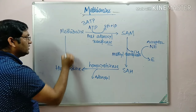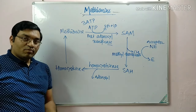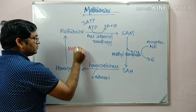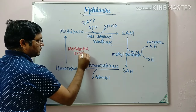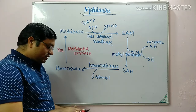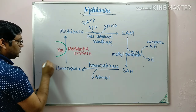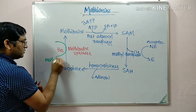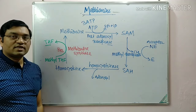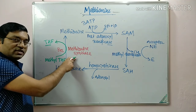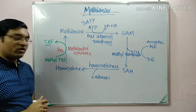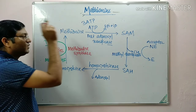Homocysteine is converted back into methionine. Two reactions are important here: first the methyl transferase reaction, and second the methionine synthase reaction. For the methionine synthase reaction, vitamin B12 is required, and there is utilization of methyl tetrahydrofolate, which is converted into tetrahydrofolate. So methionine synthase is vitamin B12-dependent; it requires methyl tetrahydrofolate, which is converted to tetrahydrofolate as homocysteine is converted into methionine.